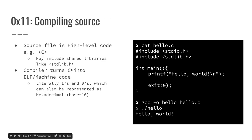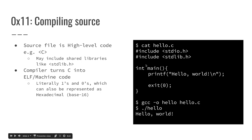Back to where we were. So this program right here, GCC, is a compiler. It takes the source code of this C program and it turns it into an executable.